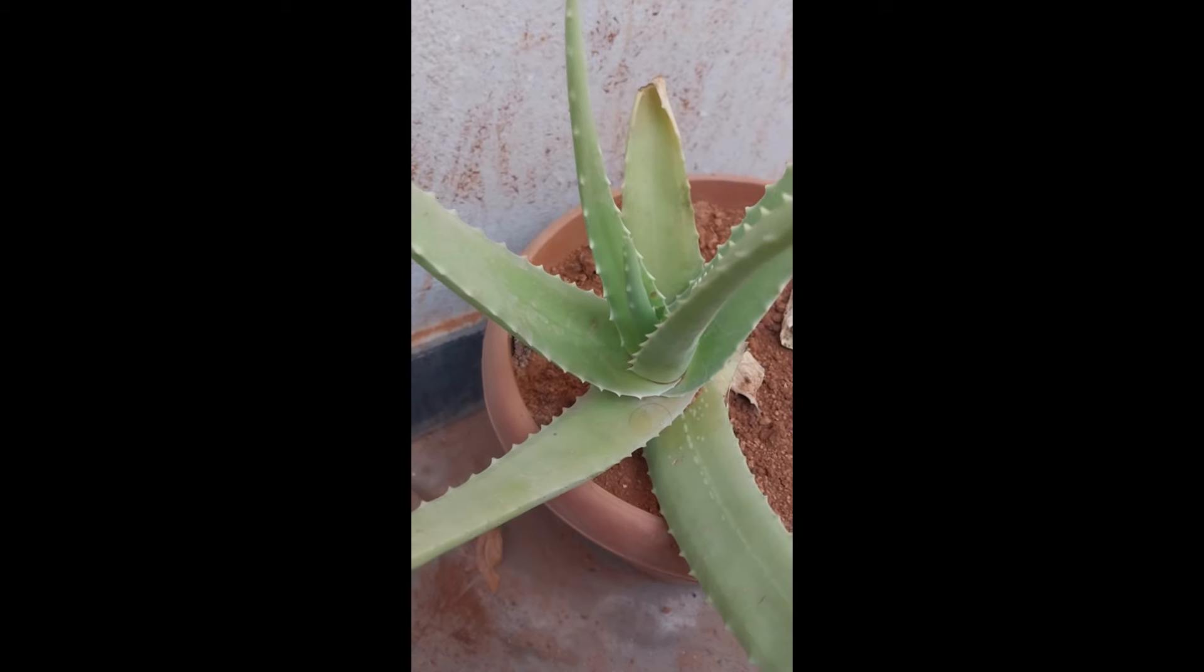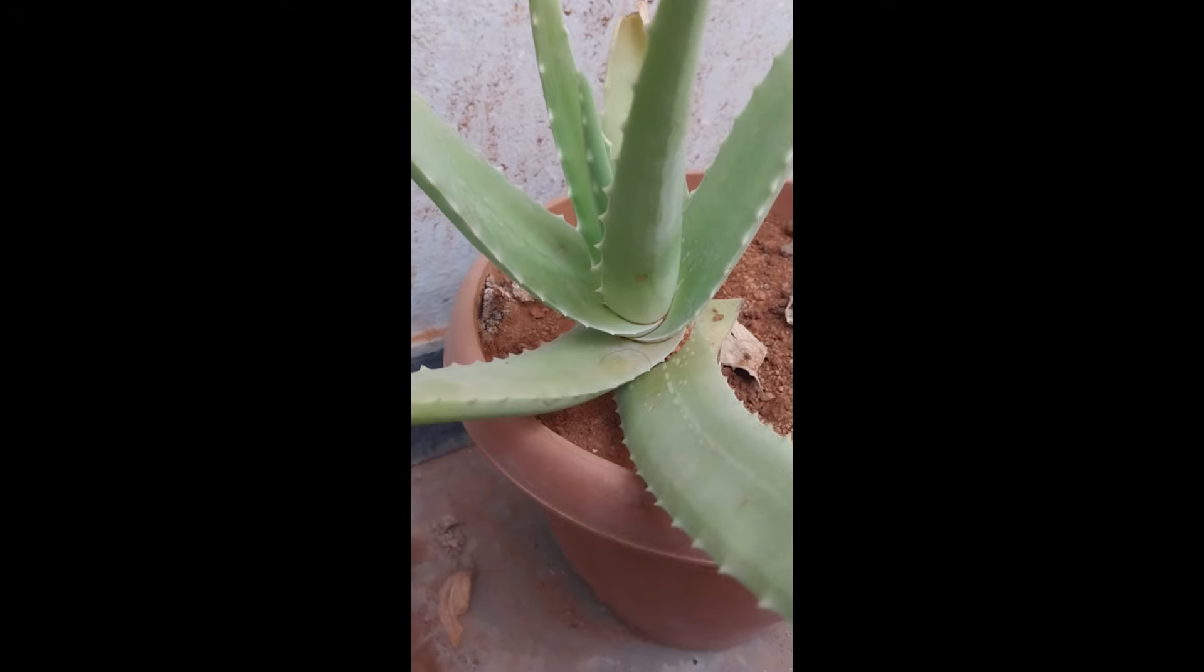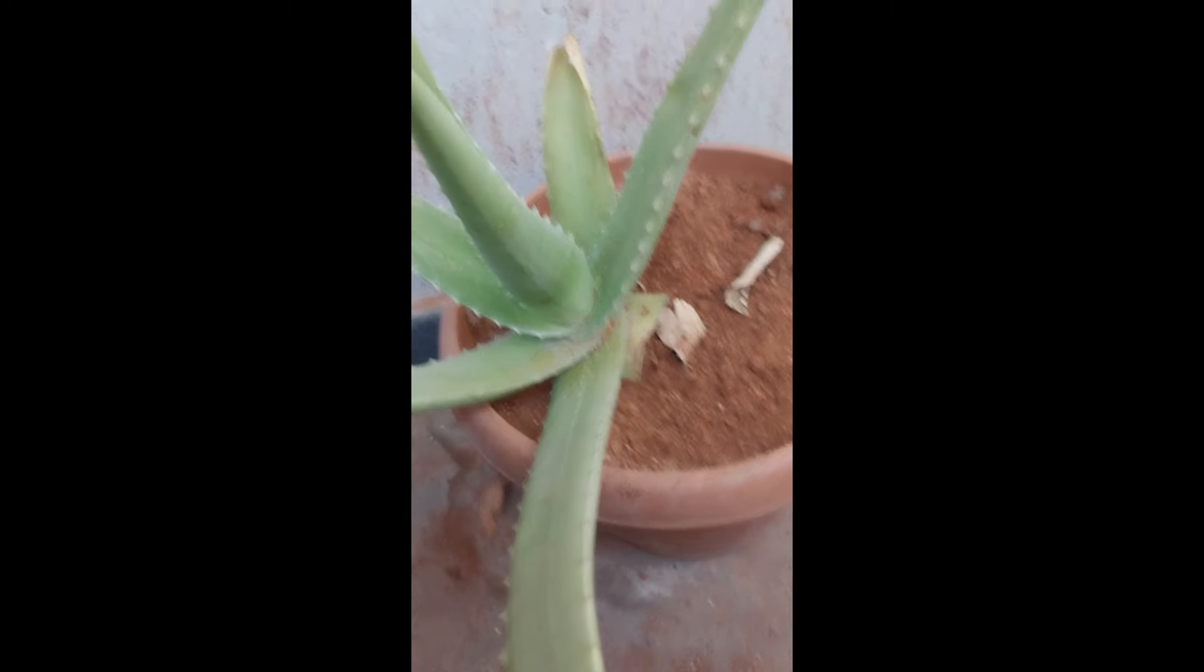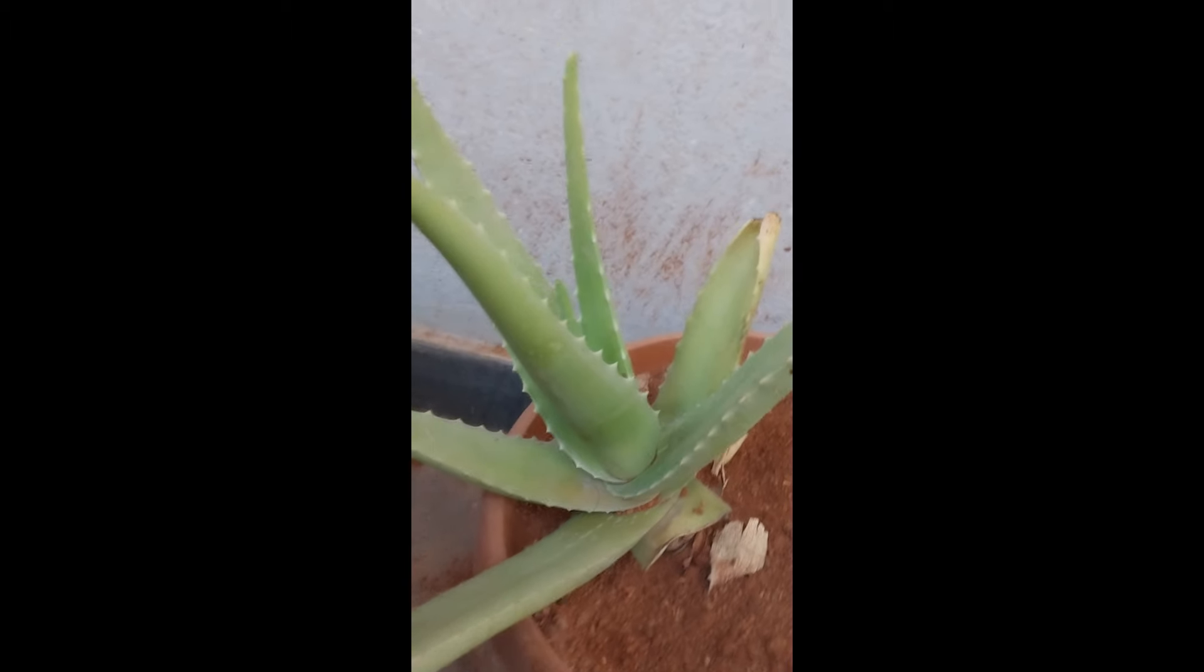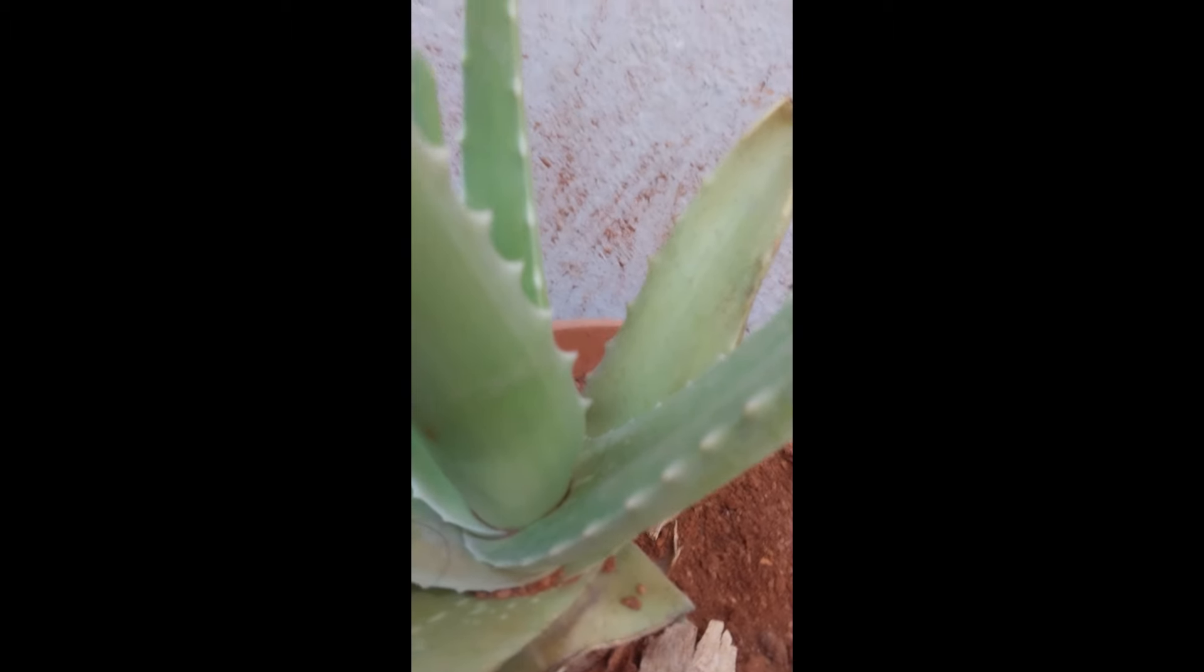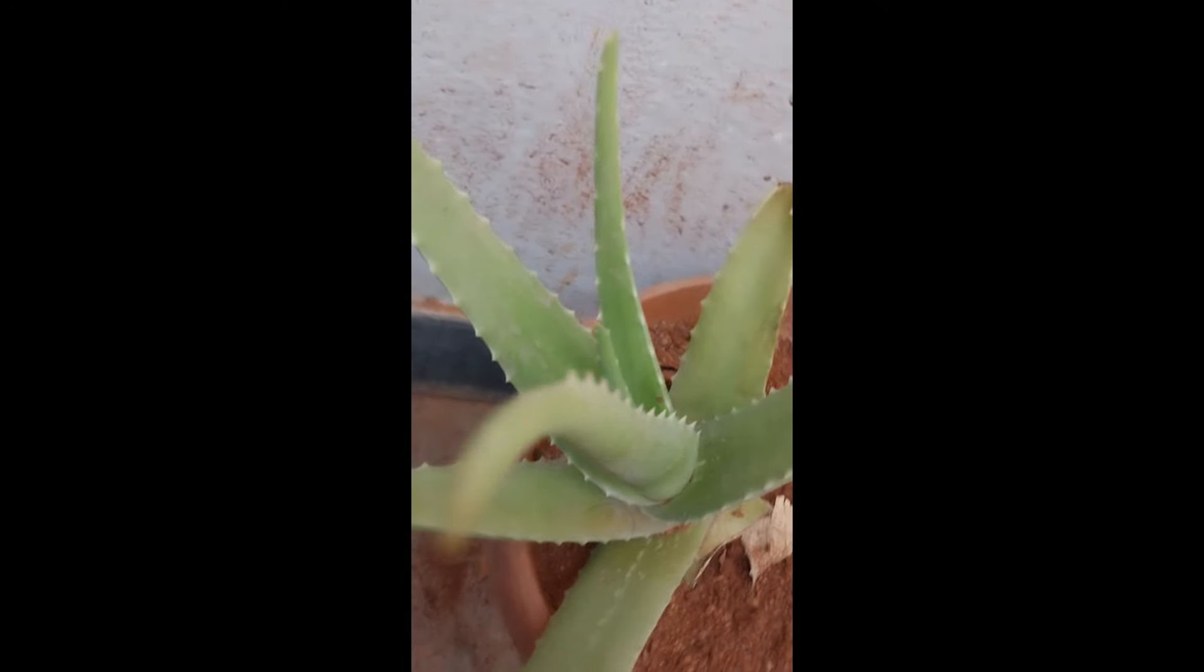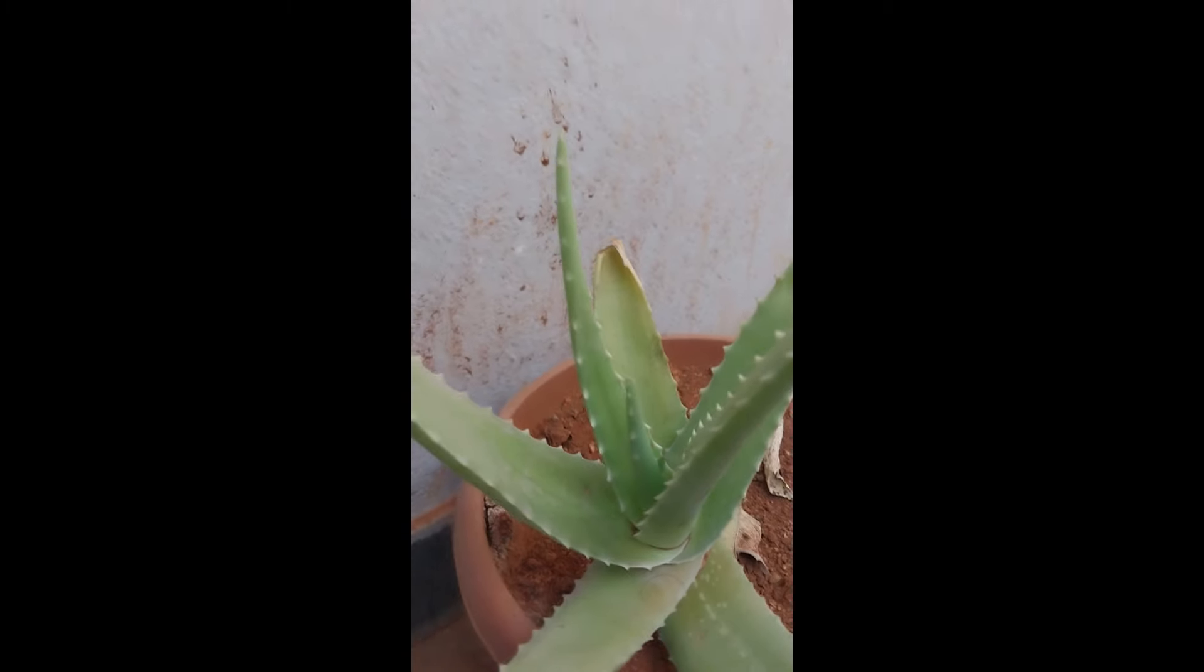The botanical name of aloe vera is Aloe barbadensis miller. It belongs to Liliaceae family and is a shrubby or arborescent, perennial, xerophytic, succulent, pea-green color plant. It is one of the plants which produce more oxygen compared to other plants. Aloe vera leaves conserve water in form of gel. It is used to heal burns and wounds. It is also good for skin and hair health. It's edible and contains many nutrients which are good for our body.